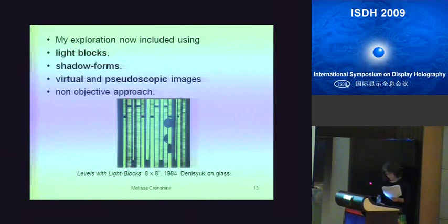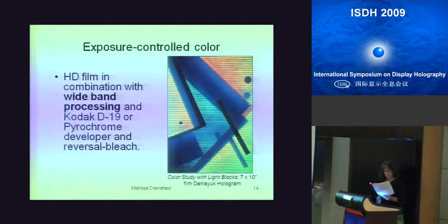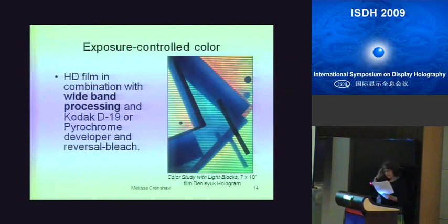Exposure controlled color. Although my technical understanding of optics was limited, my background in black and white photography provided solid darkroom processing skills. The dynamic range of the new HD film, in combination with Kodak D19 or pyrochrome and reversal bleach processing, made it possible to produce up to three colors and color mixing just from variations in exposure times. The exposure controlled color technique was seldom used in pseudocolor holography, which at that time was focused on pre-swelling. The subtle color shifts enhanced by the emulsion collapse of the overlapping exposed areas produced an extended palette of flowing colors.